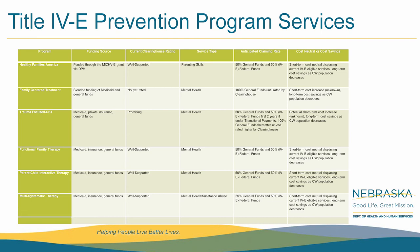Through additional discovery, we have determined that new staff or additional administrative expenses are not anticipated, as FFPSA will be implemented with current staffing levels. However, we are currently working with Maine Spring Consulting to provide a thorough and comprehensive fiscal analysis regarding the cost-effectiveness and cost-benefit ratio for each of the services identified. This list of services will expand and will be an ongoing continuous list. The federal government has a federal prevention clearinghouse providing a list of currently rated services and pending services, found at prevention services.abtsites.com.